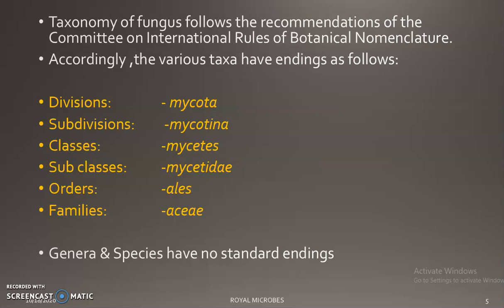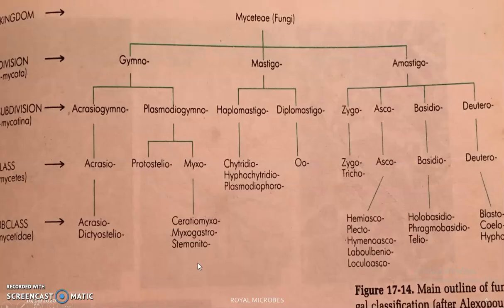This taxonomy of fungus mainly follows the recommendations of the International Committee — the rules of botanical nomenclature. According to this committee, the various taxa have endings as follows: division ends in -mycota, subdivision in -mycotina, classes in -mycetes, subclasses in -mycetidae, orders in -ales, families in -aceae. Genus and species have no special endings.